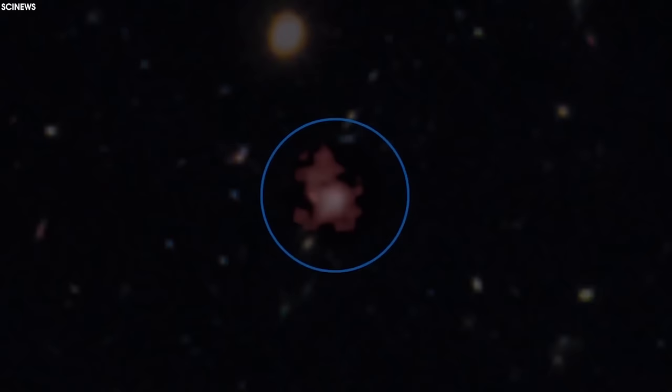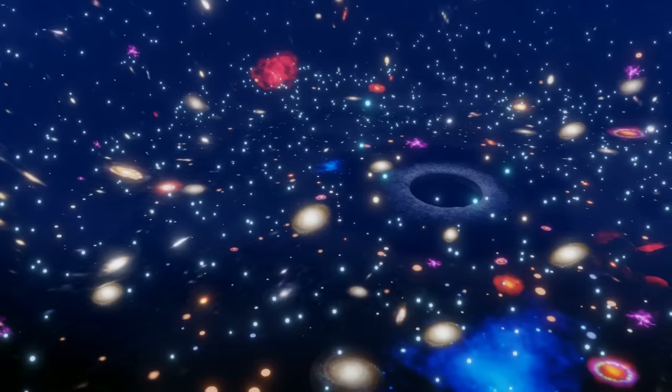In 2015, the most distant galaxies known had redshift values of 8 or 9. But then the Hubble Space Telescope spotted a galaxy later named GN-z11 around redshift 11, and pushed the first galaxies even further back in time.